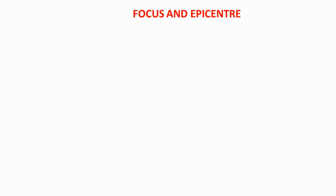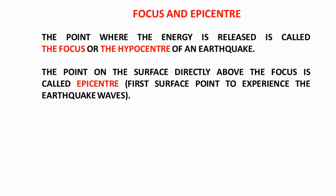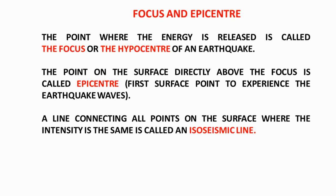Now let's understand focus and epicenter — two important terms in the context of earthquakes. The point where energy is released is called the focus or hypocenter. The hypocenter is the source point from where the wave starts to generate. The point on the surface directly above this focus is called the epicenter. Whenever an earthquake occurs, we locate the epicenter — the first point on the earth's surface where the wave hits. A line connecting all points where the intensity of waves is the same is called an isoseismic line.